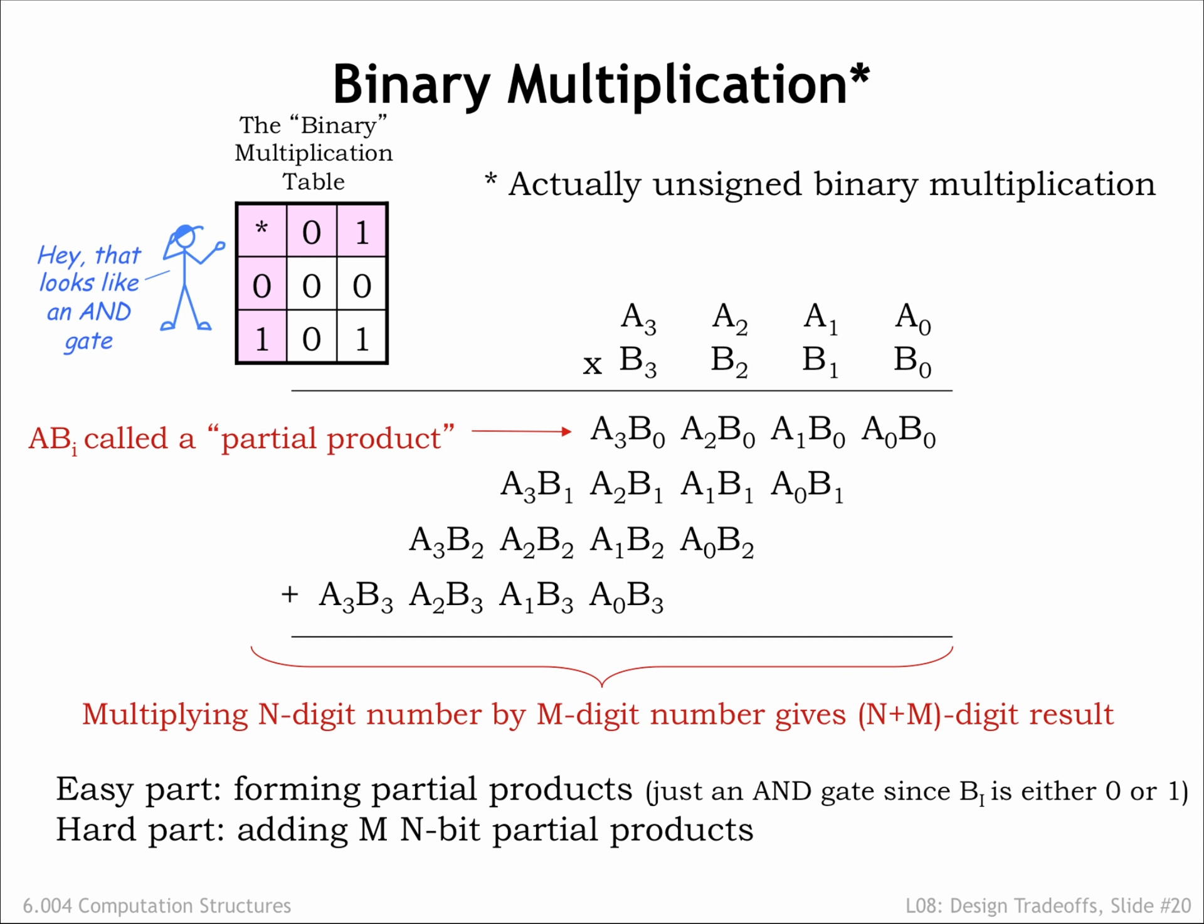The easy part of the multiplication is forming the partial products. It just requires some AND gates. The more expensive operation is adding together the m n-bit partial products.